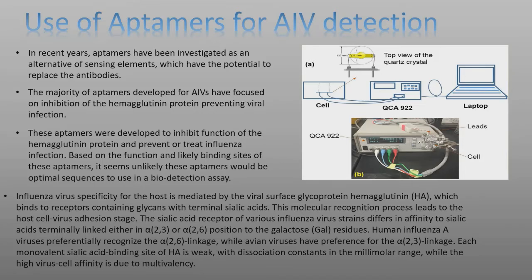It is expected that this PZT disk sensor method for influenza virus detection can be extended to other applications as well. In recent years, aptamers have been investigated as an alternative method for sensing elements. These aptamers have been developed for influenza A virus detection, focusing on the inhibition of the hemagglutinin protein to prevent viral infection.